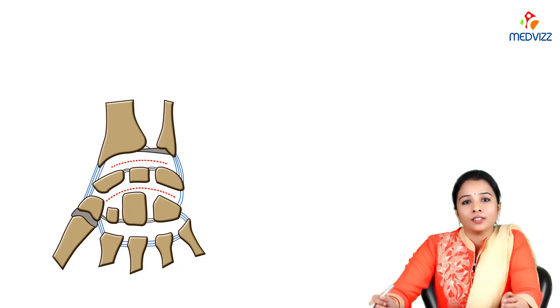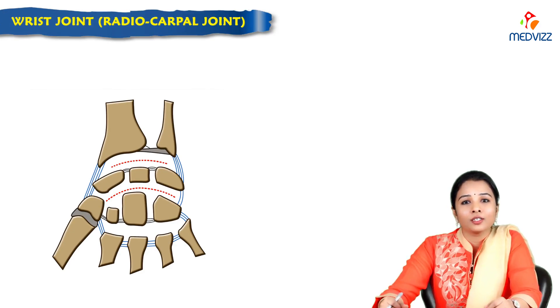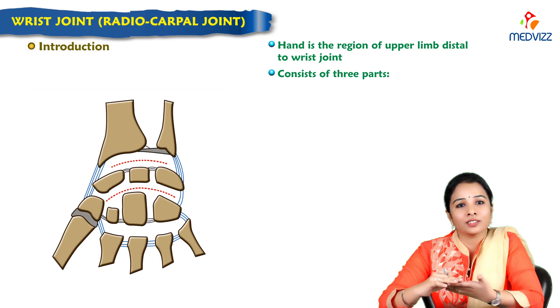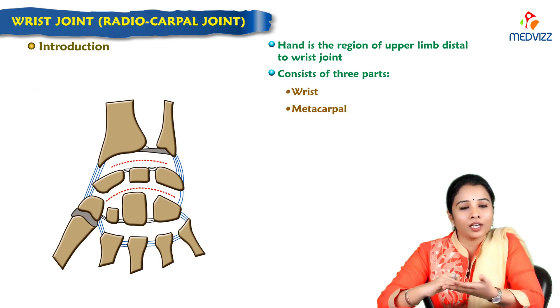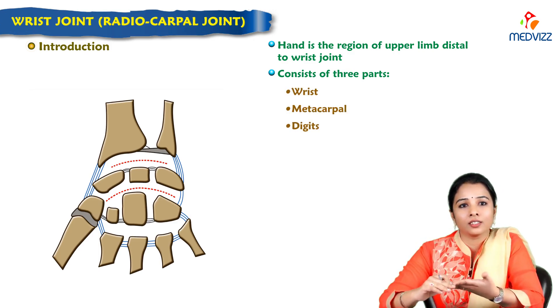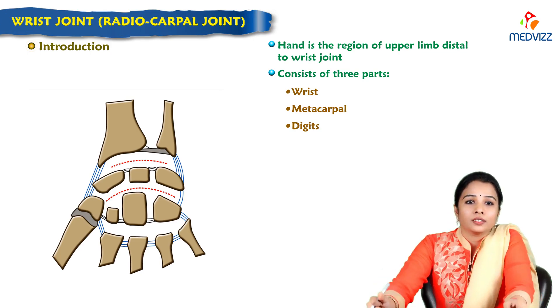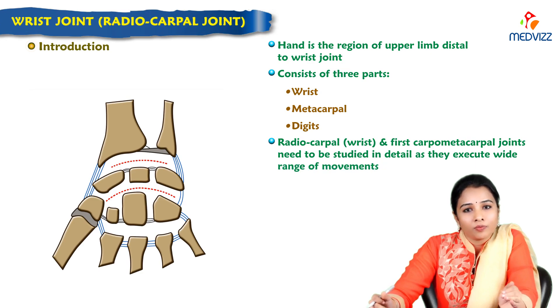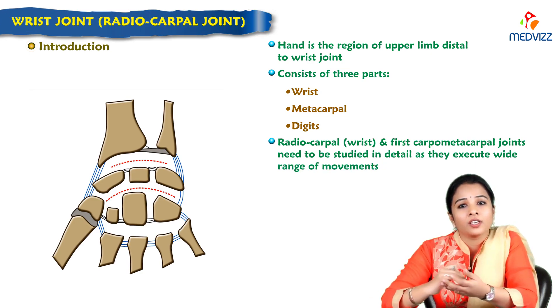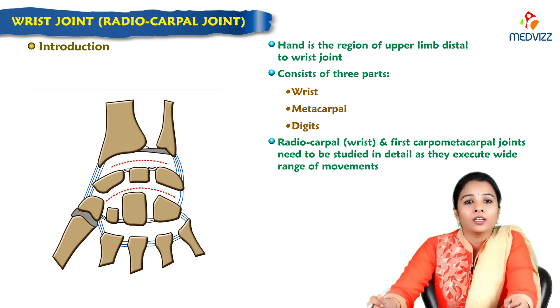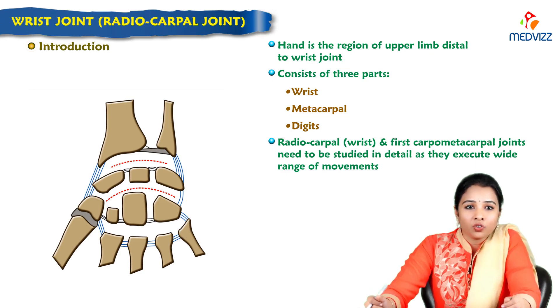Dear students, now we shall learn about the wrist joint. The hand consists of three parts: wrist, metacarpus, and digits. The study of joints is essential, especially the wrist joint and first carpo-metacarpal joints. These two joints are needed to study in detail as they execute a wide range of movements.